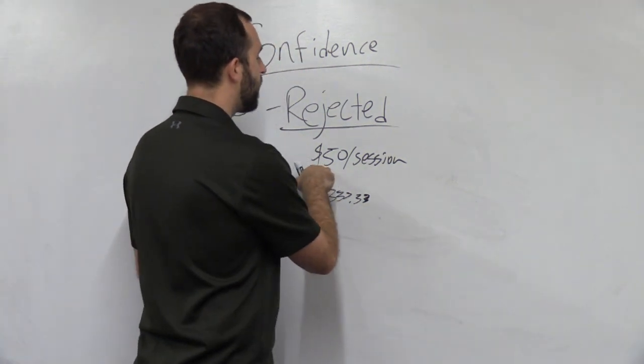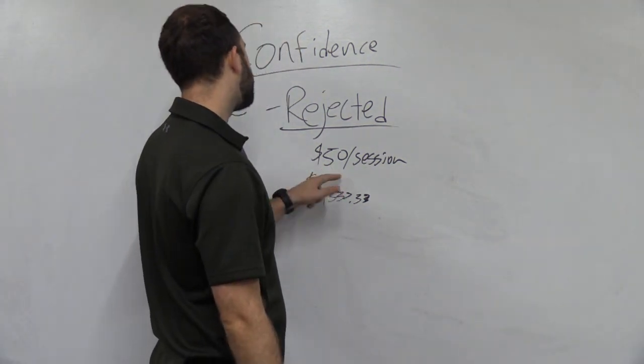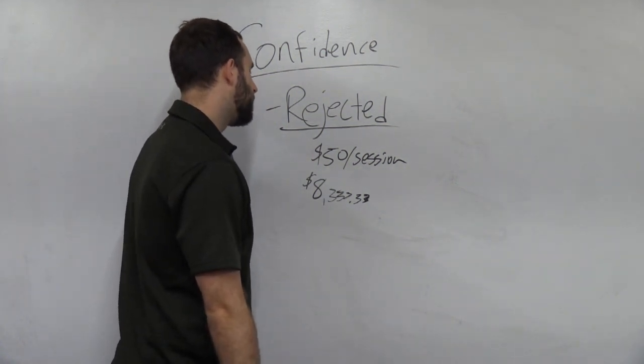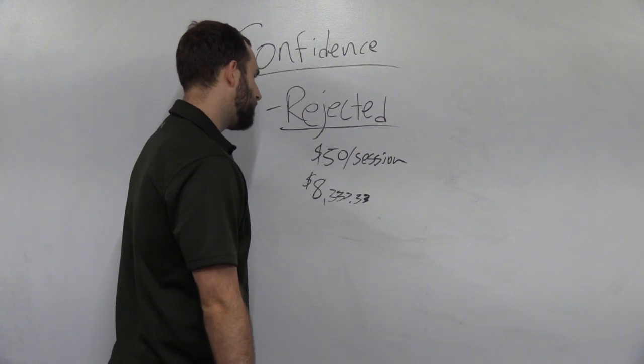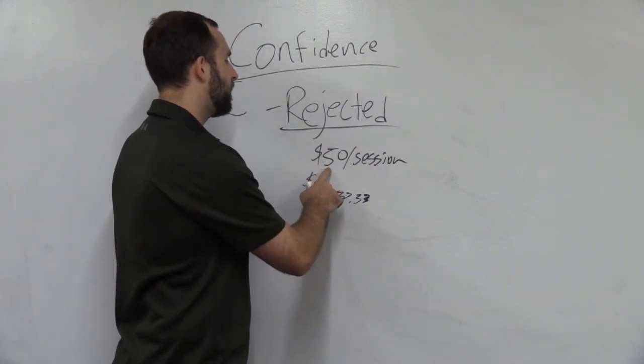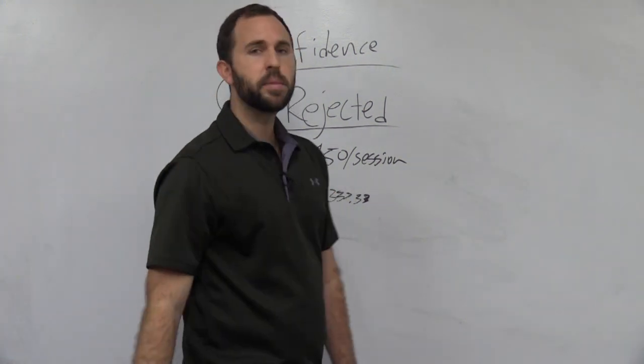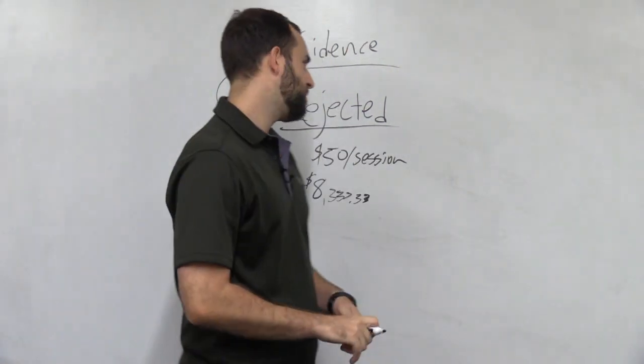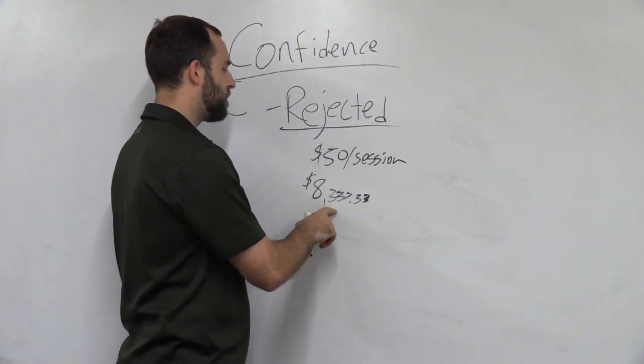And if you're doing things $50 a session, that means you'd have to do, let's see here, 50 times 20 is a thousand, right? So that means you are doing 20 sessions a week to make $1,000.